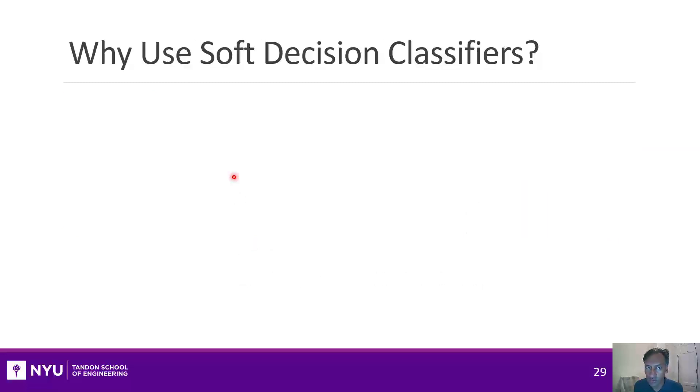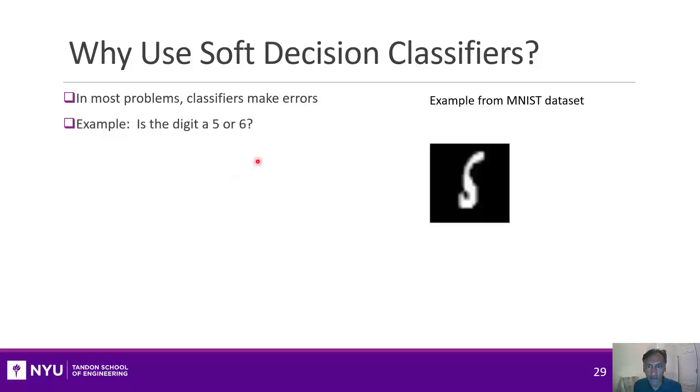Why would you use a soft decision classifier? Well, in most problems, classifiers make errors. Just as an example, consider the MNIST dataset that I mentioned way back in Unit 1. The MNIST dataset is a bunch of handwritten digits between 0 and 9, and the problem is to estimate which digit it is. A lot of the digits are pretty clear, but suppose I got a digit like this. It could be a 5, but it could also be a 6.